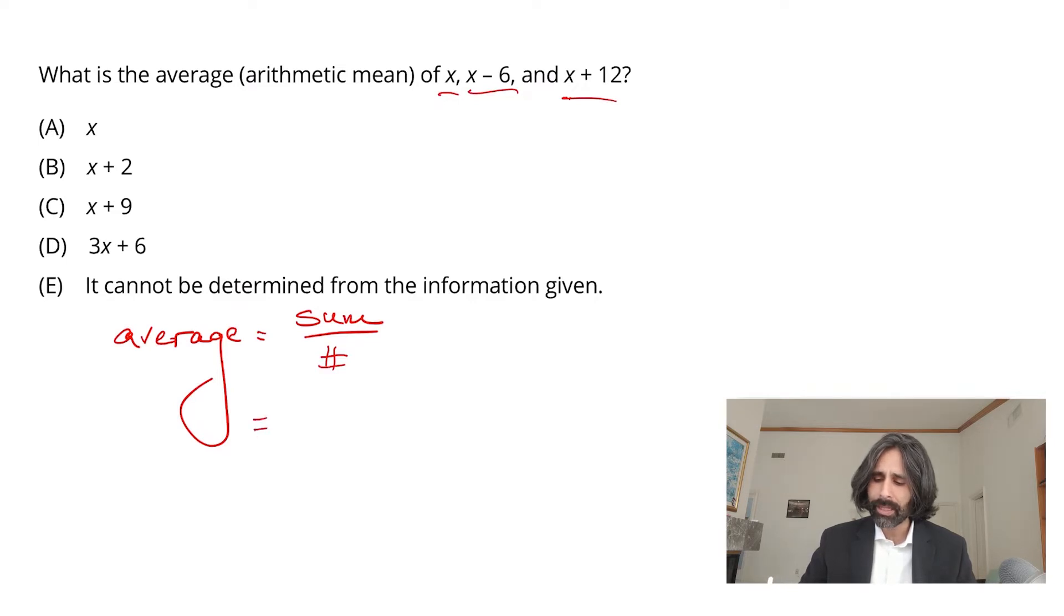And they all go on top of this formula to give us the sum. So the average is going to be x plus x minus 6. The parentheses are totally unnecessary. I like to put them there just to remind myself that that thing's being treated as a single term. And of course, last but definitely not least, x plus 12.